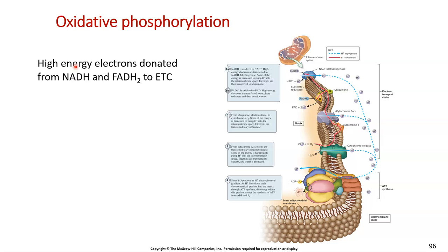Those high energy electrons are going to be donated from NADH or FADH2 to this electron transport chain, which are the series of proteins down the line.